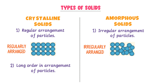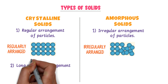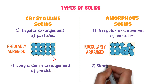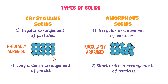We can see that all the particles have the same arrangement throughout the lattice. While in amorphous solids, there is short-range order and arrangement of the particles. These particles may be orderly arranged locally, but soon this pattern breaks and we get an irregular arrangement.